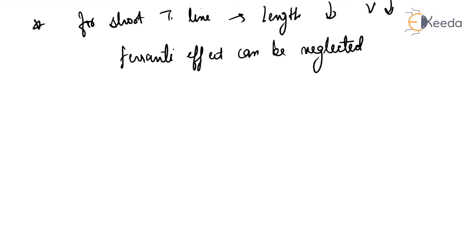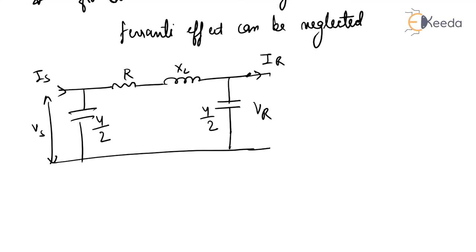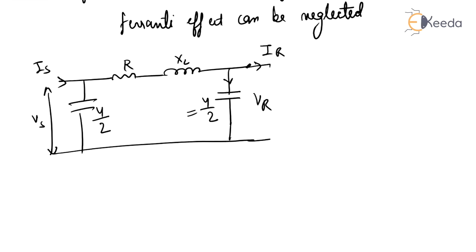Now for a detailed explanation of the Ferranti Effect, we consider the nominal pi model. This model has R and L in series, and capacitors on either side, making it pi-shaped. The sending end voltage and sending end current are on one side, and the receiving end voltage is on the other. The admittance Y/2 on each side equals jωC·L/2, where L is the length of the line. In this equivalent circuit, conductance is neglected and only capacitance is considered.